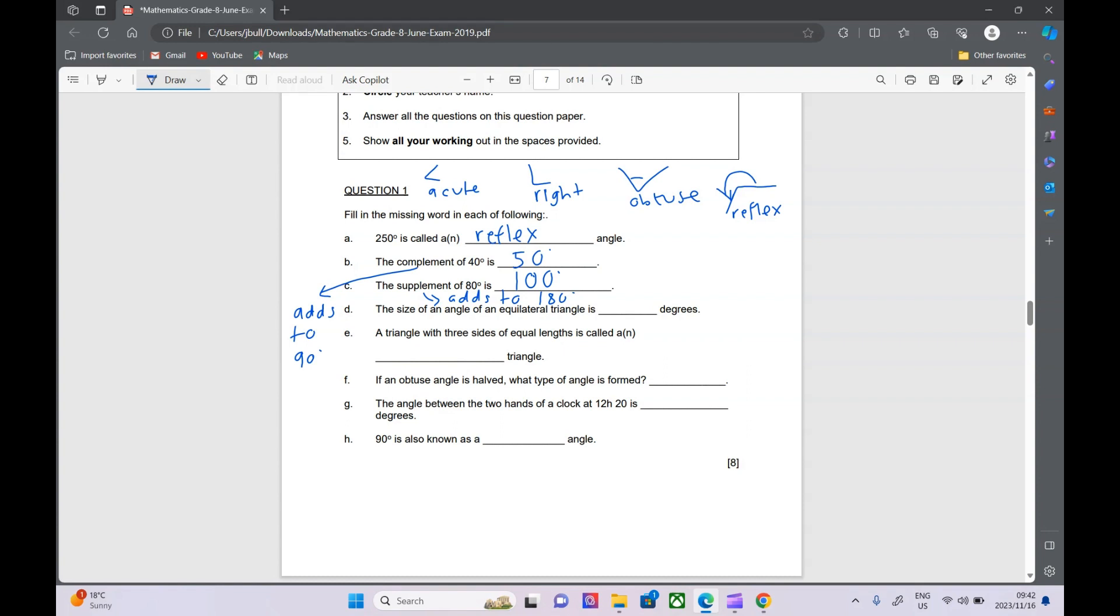The size of an angle of an equilateral triangle. So equilateral triangle means all the angles are equal. And we have to know every angle in an equilateral triangle is 60 degrees. A triangle with three sides of equal length - they have given this to us in the question before. So if you're worried about spelling, you've got it right there. A triangle with three sides of equal length is equilateral. Equilateral literally means equal and lateral is sides.